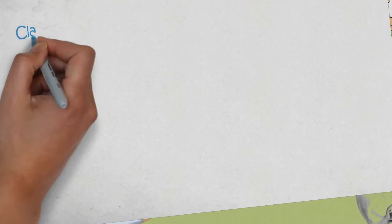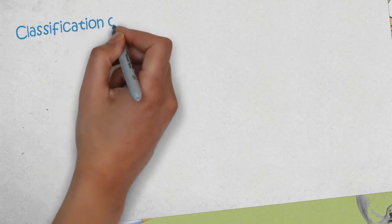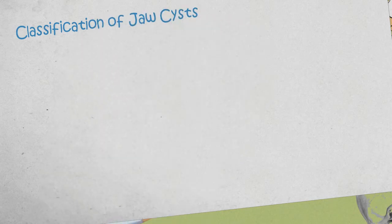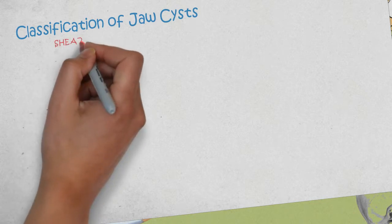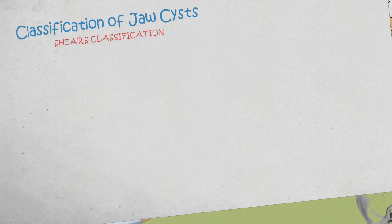Cysts in the jaws are a very common occurrence when compared to any other parts of the body. The cysts are of varied types, with classifications given by various scientists, which can be very helpful to divide each cyst based on its origin and its clinical presentation.